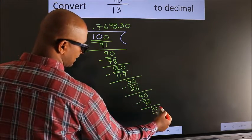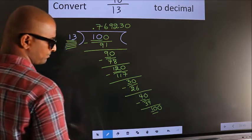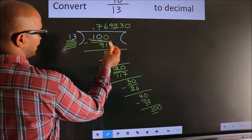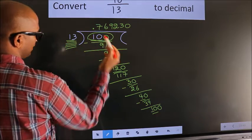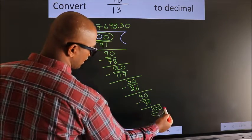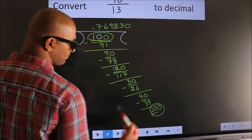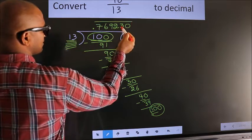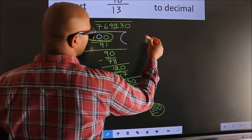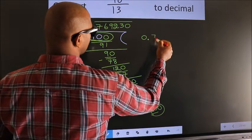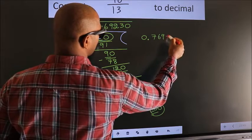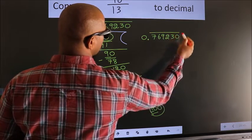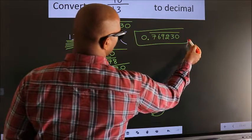Now observe: we had 100 earlier and we get 100 again — that means the digits repeat. Therefore our answer is 0.769230 with a bar over these repeating digits. This is our answer.